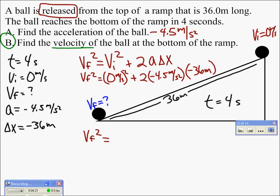And then we're going to go 2 times negative 4.5 meters per second squared times negative 36 meters, just to keep that straight. And when we do that we say that the final velocity squared is equal to 324, and that's 324 meters squared divided by second squared if you're keeping track of the units.